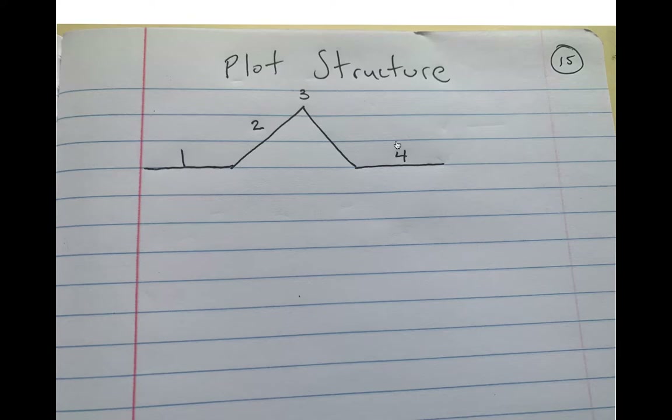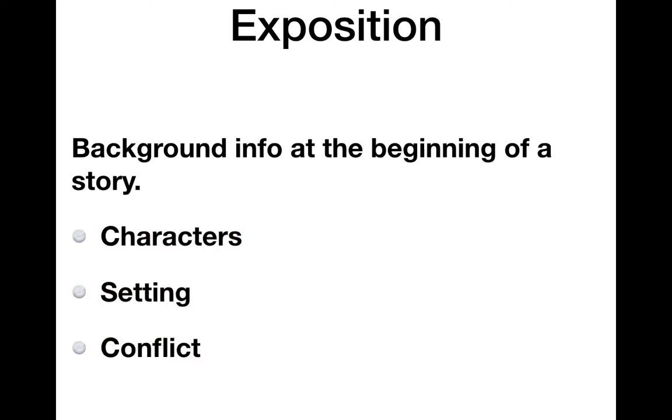Today we're going to focus in on number one a little bit. Exposition is background info at the beginning of a story, and it includes three things: exposition, background info — character, setting, conflict. Character, setting, conflict.